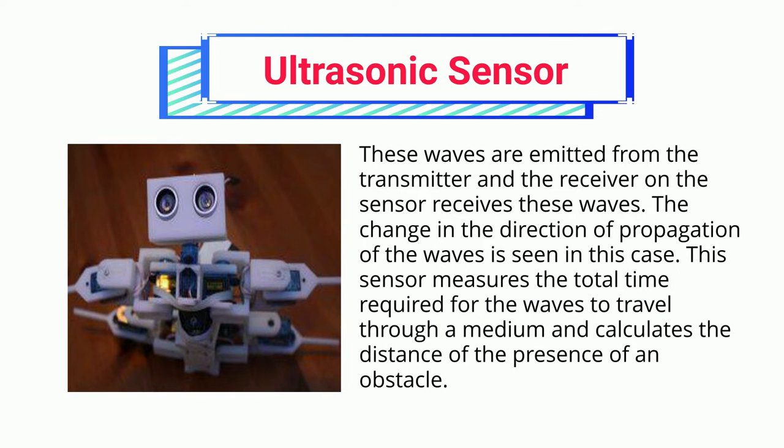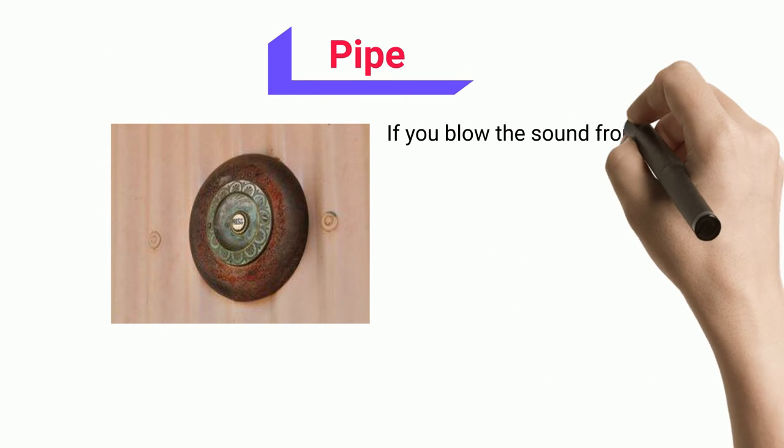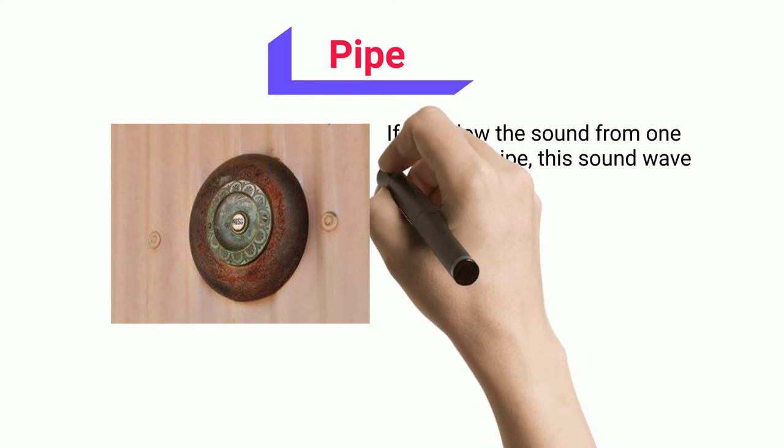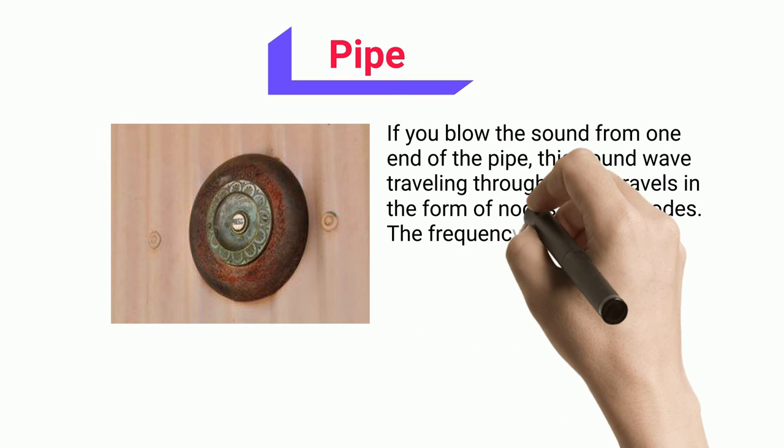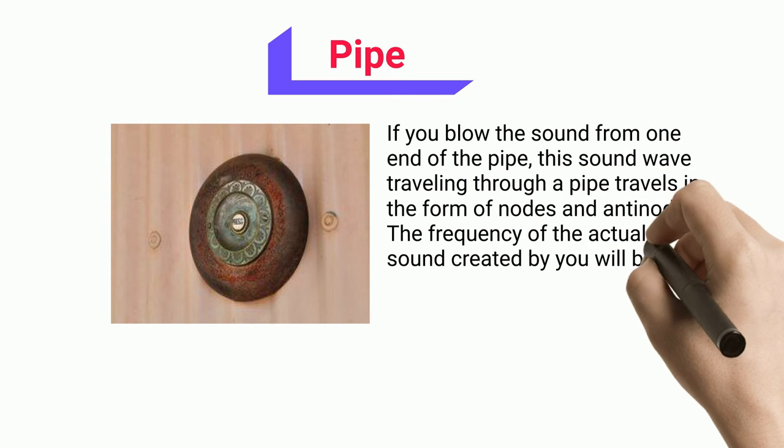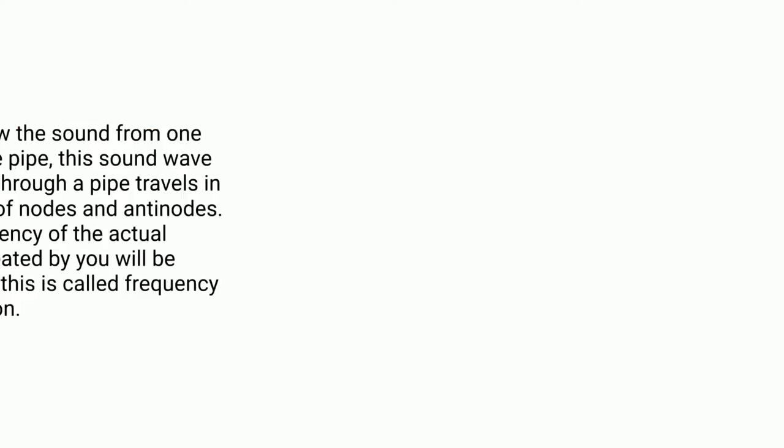Pipe: If you blow the sound from one end of the pipe, this sound wave traveling through the pipe travels in the form of nodes and antinodes. The frequency of the actual sound created by you will be modified. This is called frequency modulation. Wrecking ball: